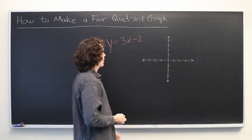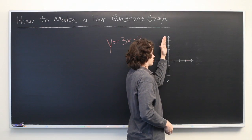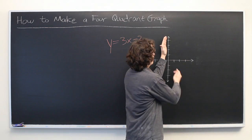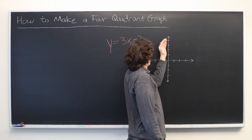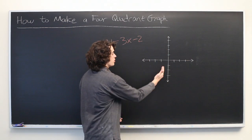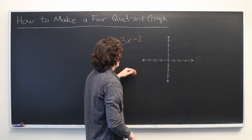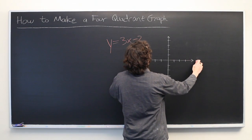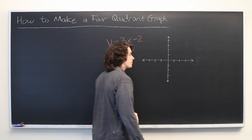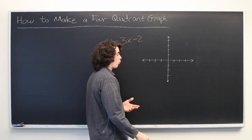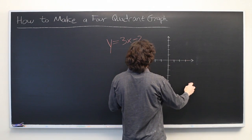Okay, so recall that any time the input value is positive, we'll be on the right side of our graph. And any time the input value is negative, we'll be on the left side. And similarly, any time the output value is positive, we'll be on the top half. And any time the output value or y value is negative, we'll be on the bottom half.